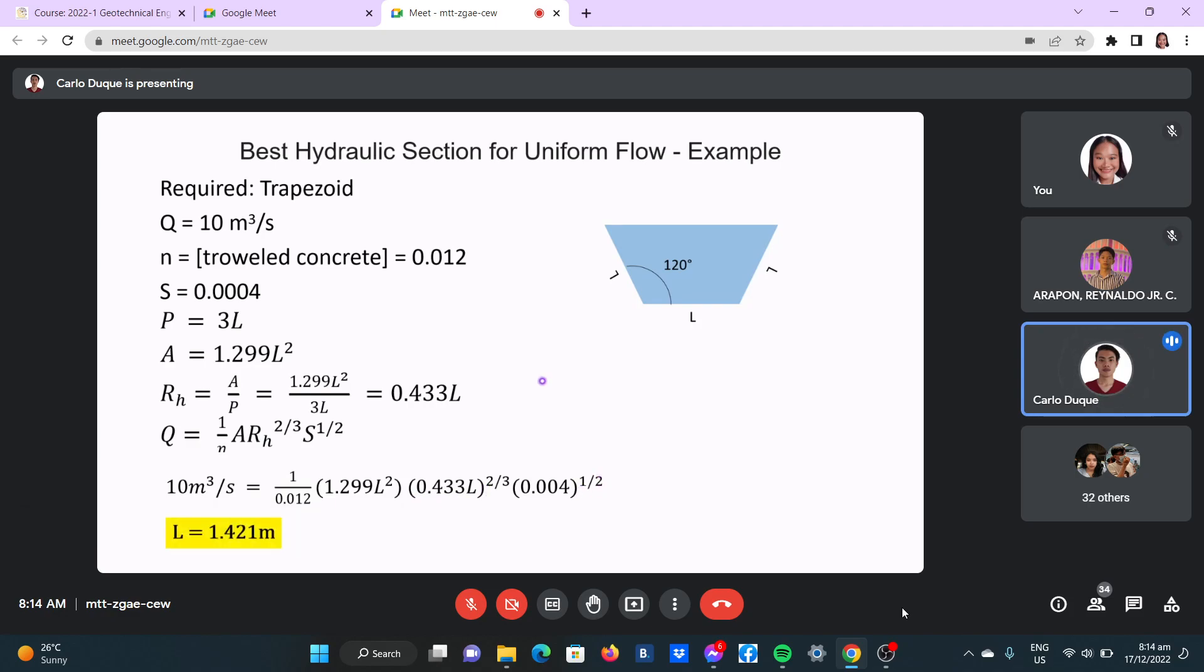We can get L equal to 1.421. That can be further solved. The goal is the area, your height should be 0.866 times L when you compute. So that's where you stop, when L is equal to 1.421. It depends on what they ask. For example, what will be the height of the trapezoidal channel? Then you just plug in and compute the H. So okay, that's it for our discussion. Any more questions?